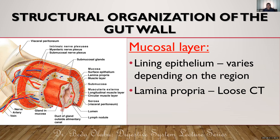Deep to the epithelial lining is a connective tissue zone commonly known as the lamina propria. Usually it is a loose connective tissue region, but importantly the lamina propria contains extensions of the epithelial lining which form glands — we call them mucosal glands. All parts of the GIT may have mucosal glands.